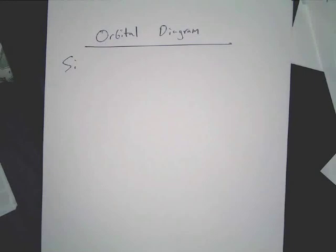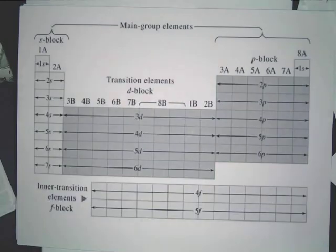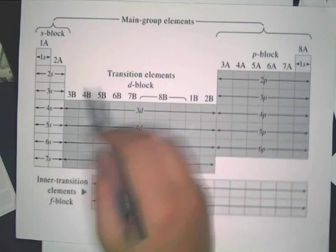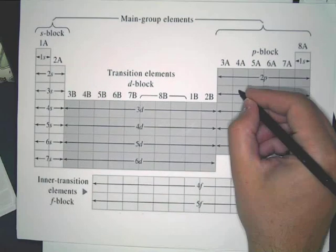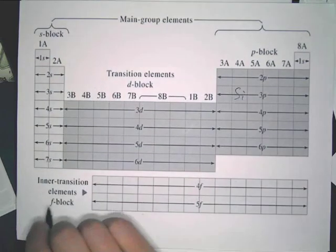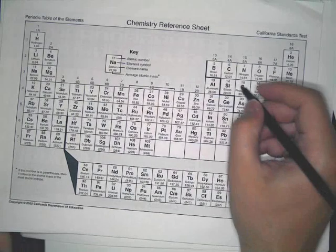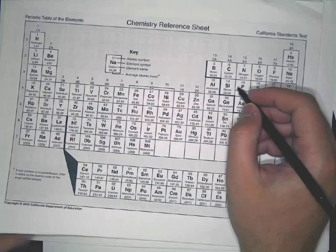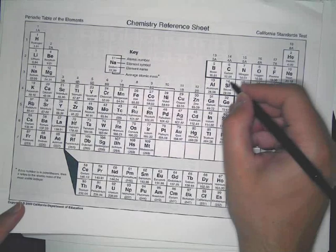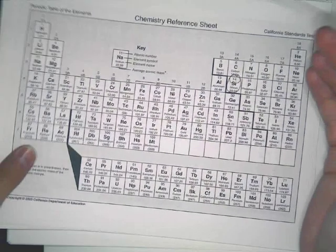First thing — this is going to be a review for you guys. So we start out: silicon is right here on the periodic table. What is silicon's atomic number? 14. It's 14, so that means there's going to be 14 electrons.